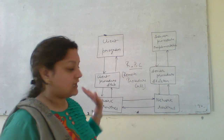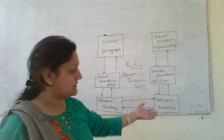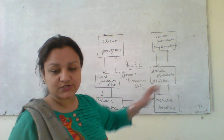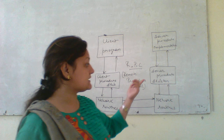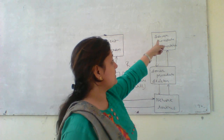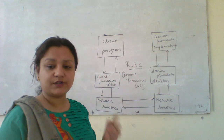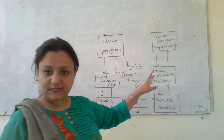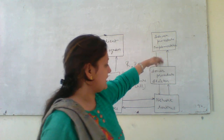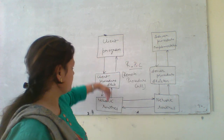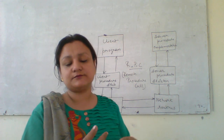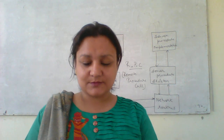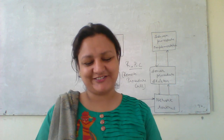From the client network routines, it moves to the network routines on the server side. There it goes to the server procedure skeleton. Then it reaches the server procedure implementation, where all the processing of the client's request takes place. After that, the cycle reverses itself, and the output is sent back to the client. I hope you understand the concept of RPC. Thank you and have a nice day.